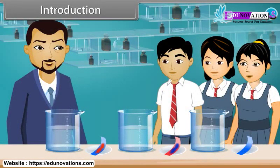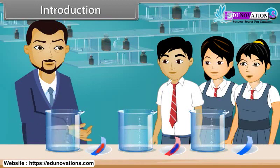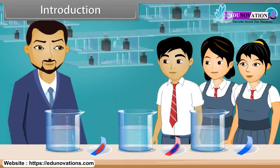Sir, what is equilibrium? Equilibrium is a condition when the number of moles of base becomes equal to number of moles of acid. In this lesson you will study the physical and chemical equilibrium.